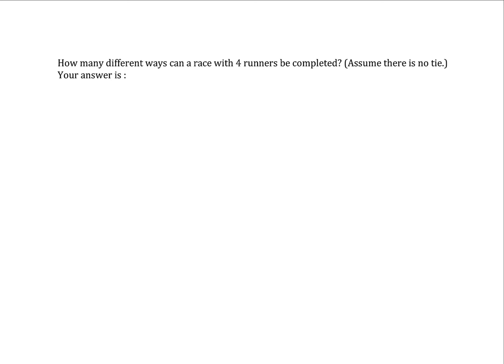How many different ways can a race with four runners be completed? Assume there is no tie. So we have a race and all four runners are eventually going to complete the race. We want to know how many different ways that can happen.